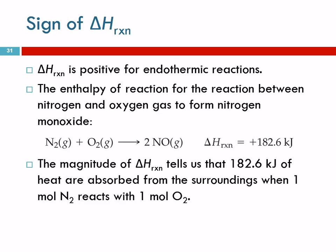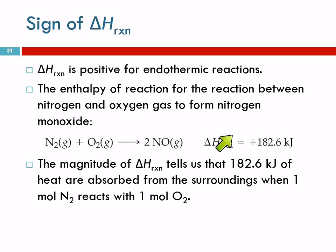If you have an endothermic reaction, delta H is positive. For example, nitrogen reacting with oxygen to form nitrogen monoxide gas absorbs 182.6 kilojoules of energy. It will absorb that much energy for one mole of N₂, one mole of O₂, or for every two moles of NO that are produced.